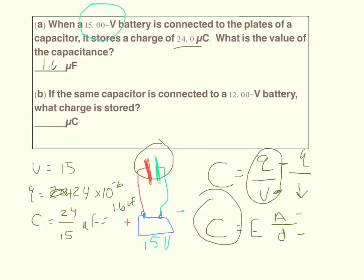And the last thing says if we hook the same capacitor - so like I just said, any given capacitor, the capacitance is based on the physical properties of the capacitor, so the capacitance, the farads, is not going to change. So it says if I take the same capacitor and hook it up to a 12 volt battery, what charge is stored?